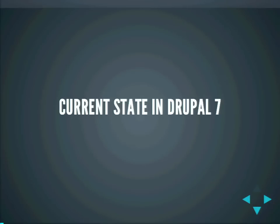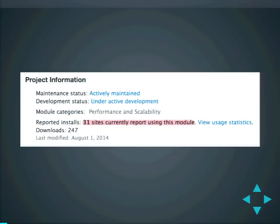I will start with the current state of render caching in Drupal 7. There's a contrib module called render cache. Does anyone use that module? Please raise your hand. Okay, that's not surprising, because the current usage of this module is really low — 31 sites, and that's from yesterday.